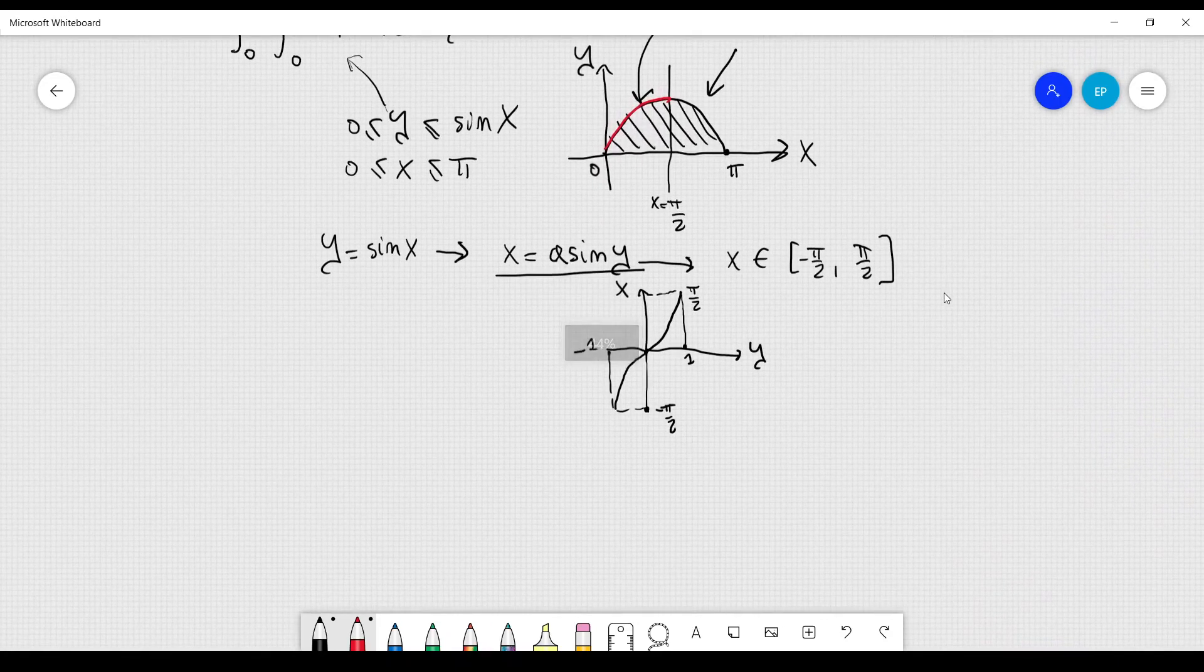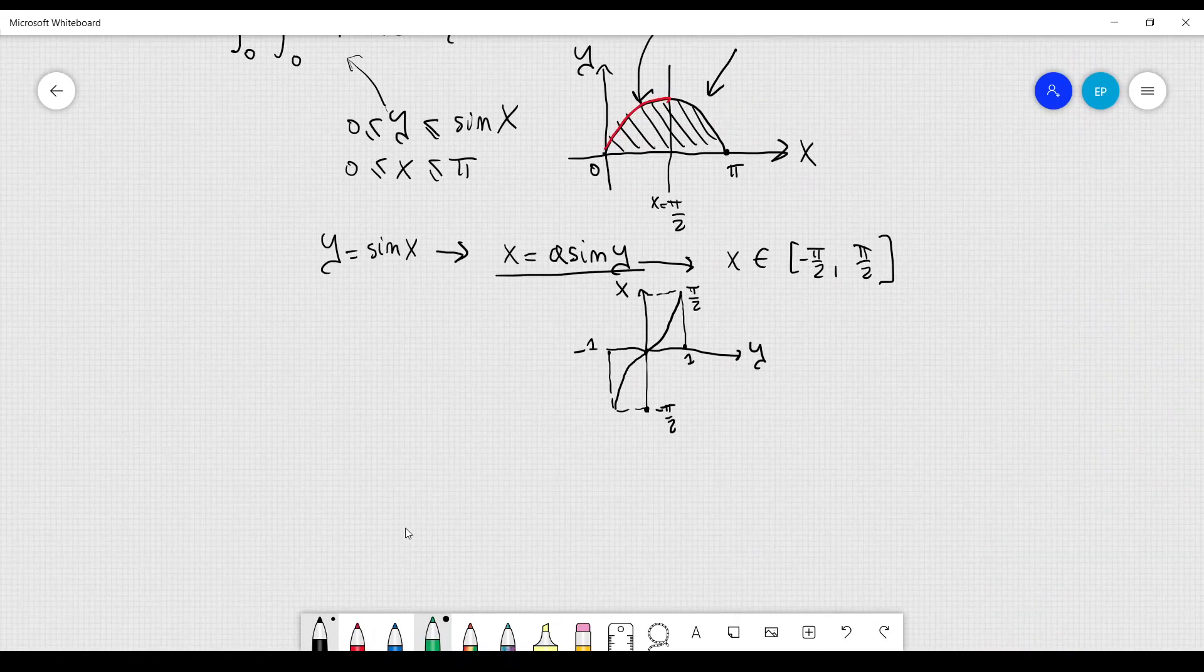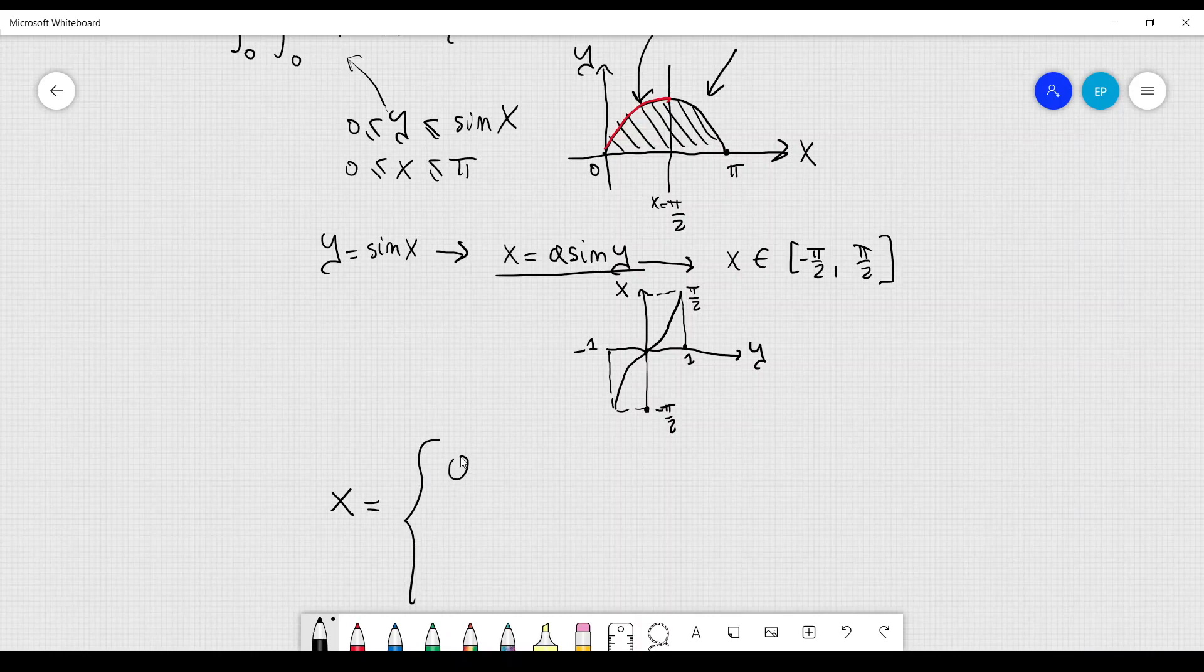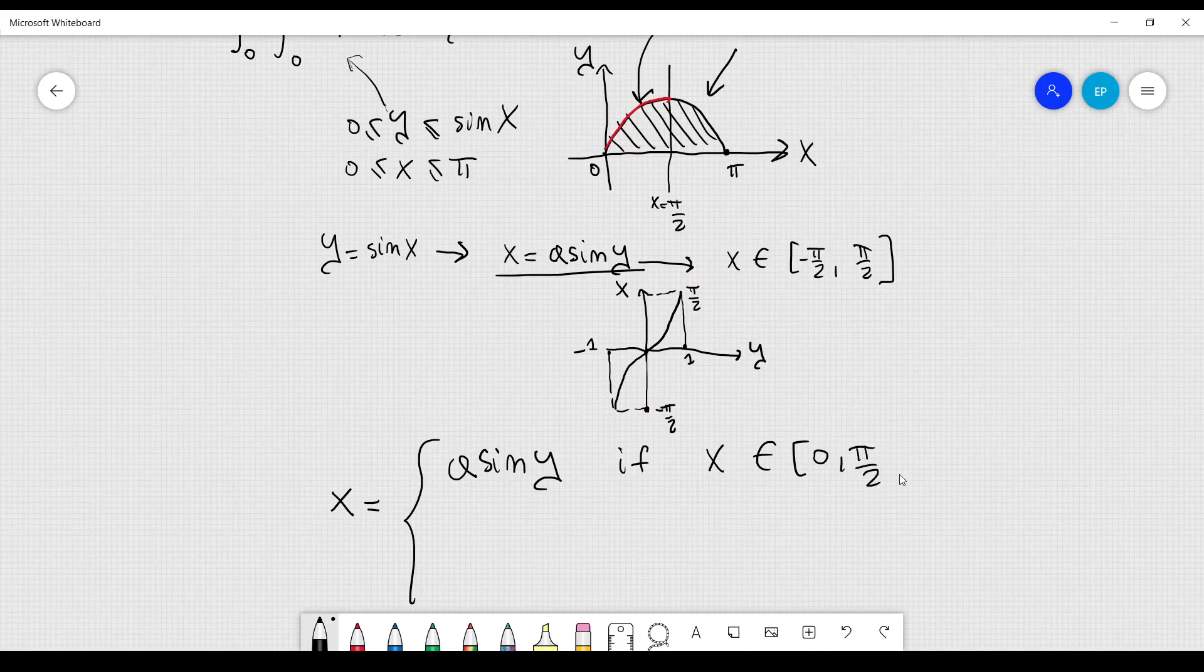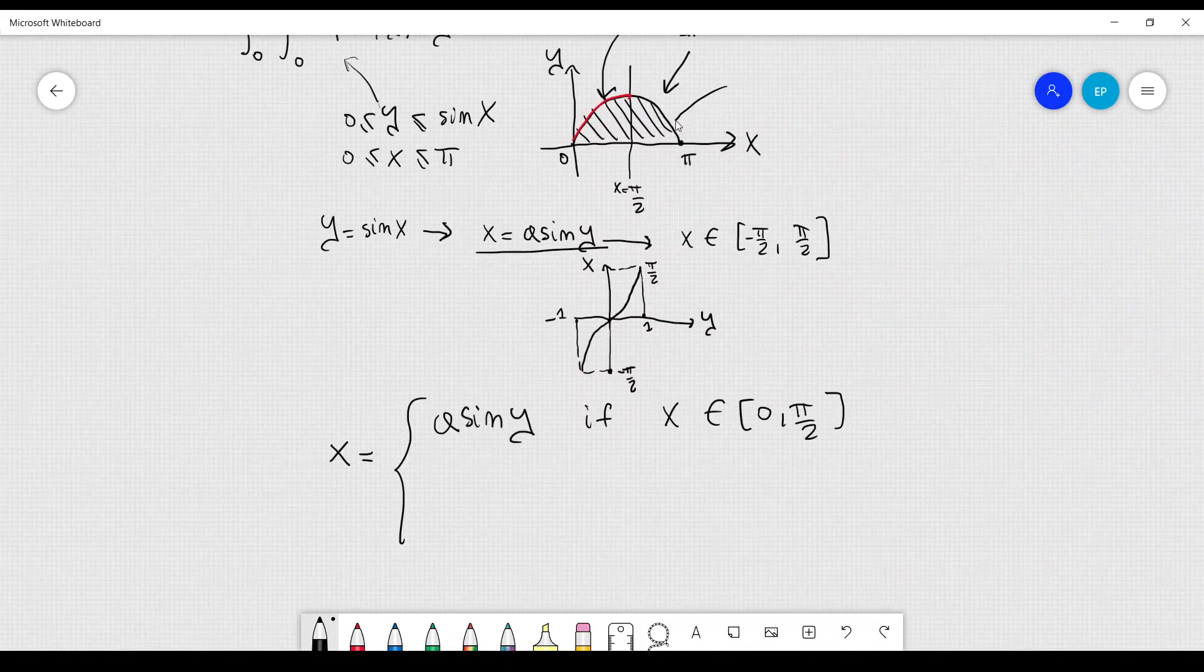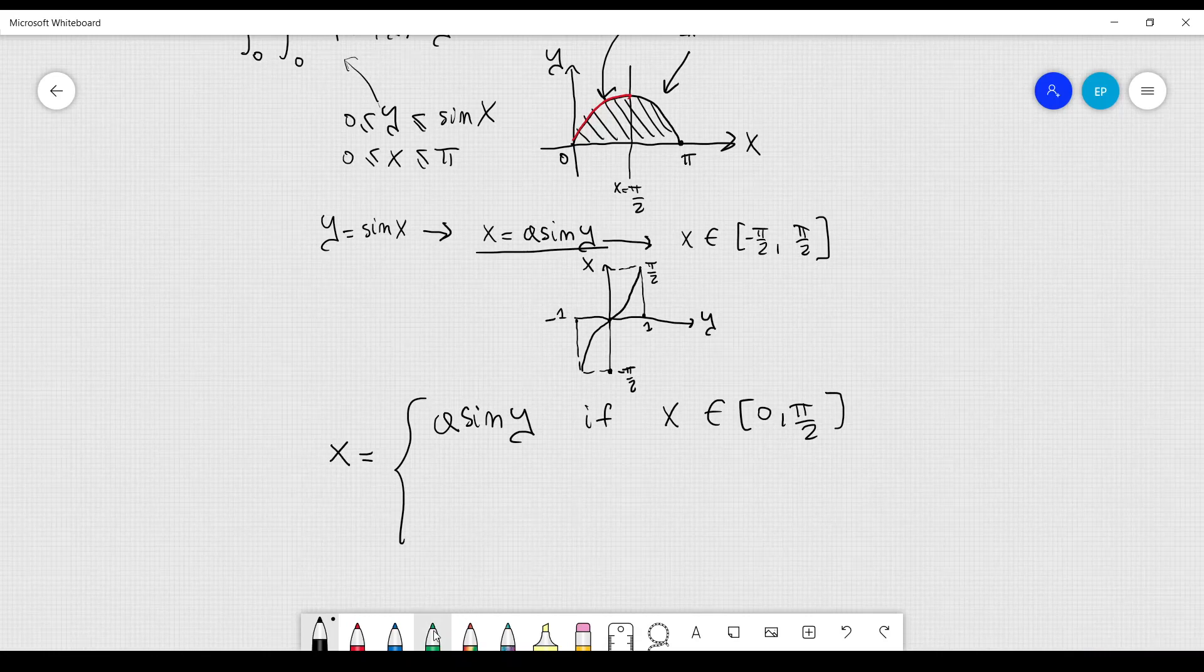We need to describe the first part and also the second part, this one here. So let's try to reason this out, where x, as I just told you, can be written as the inverse sine, arc sine of y, if x is between 0 and π over 2, but I have to be careful when I want to describe this portion here. I can do it in a few steps. It's quite simple, it's not so hard, but we have to be careful.